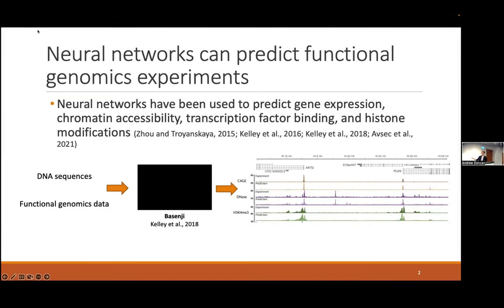These neural networks are able to make predictions on unseen datasets. What we can see here is a comparison of some experimental measurements along with the predictions from the neural networks, and we can see that these are doing quite well at recapitulating the experimental data.